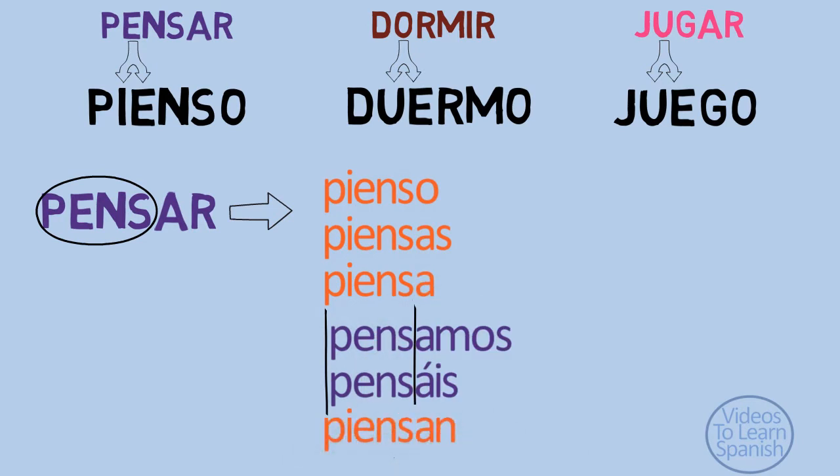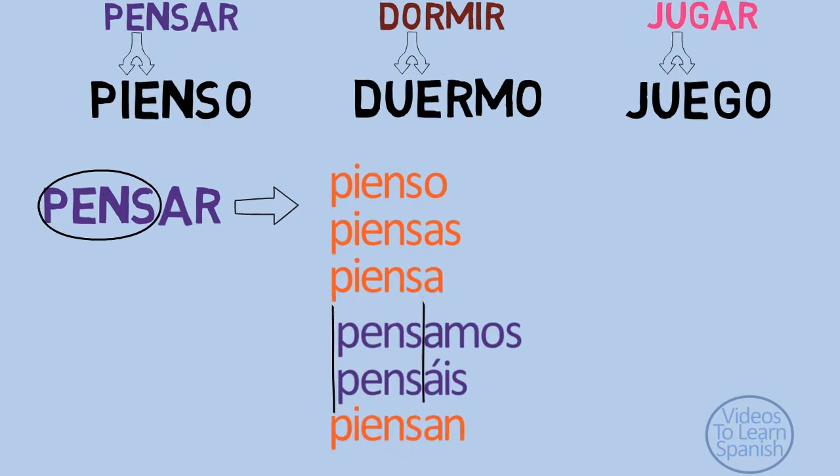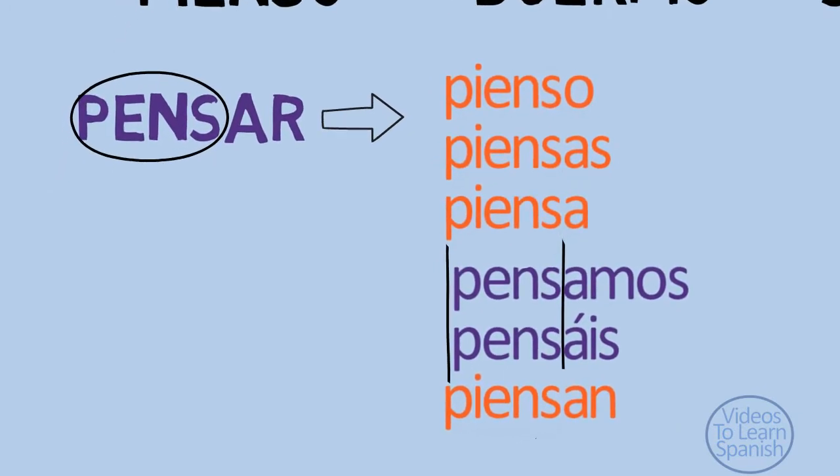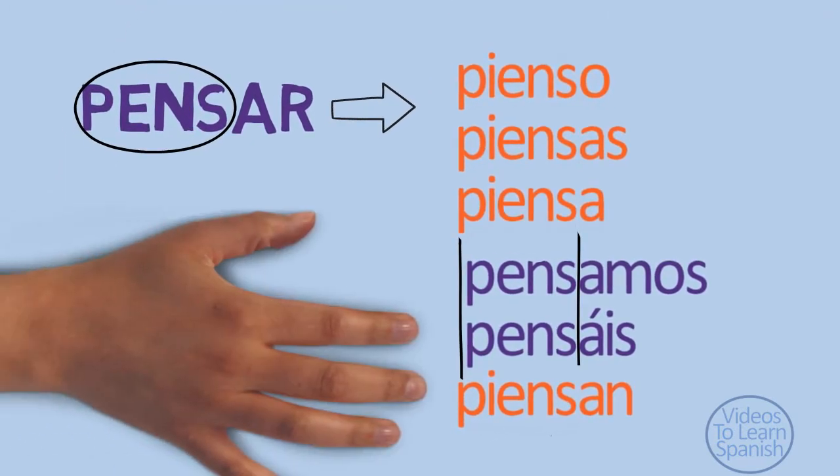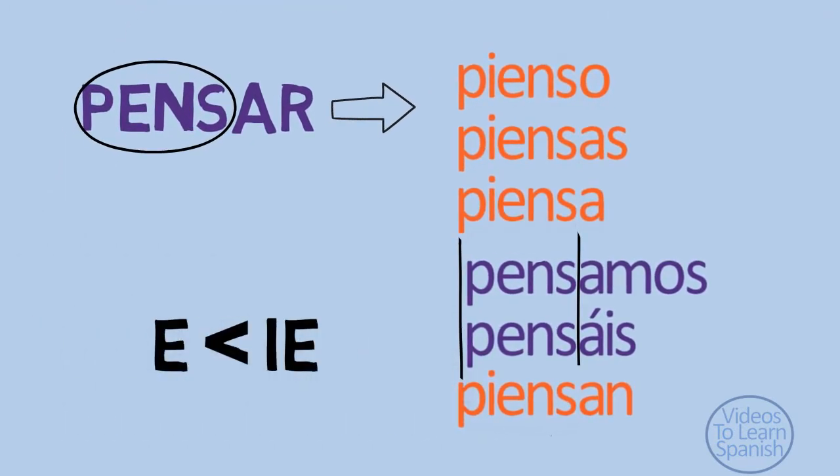The correct conjugation of pensar is: pienso, piensas, piensa, pensamos, pensáis, piensan.